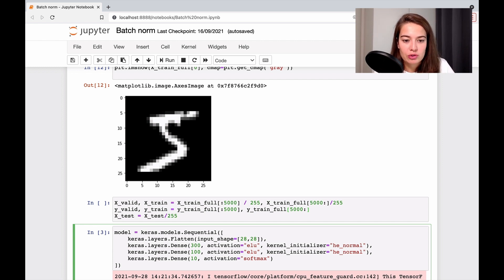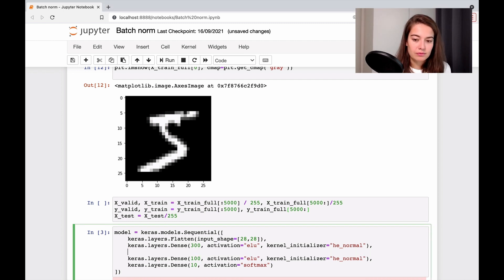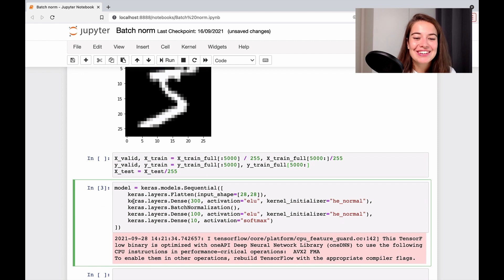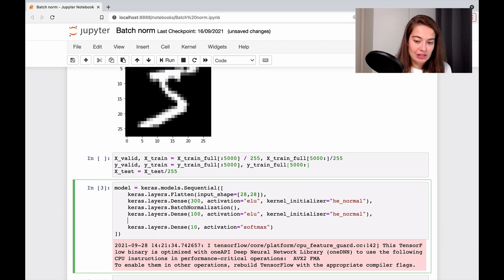How can I add batch normalization to this? Well, it's very simple. Basically, all you have to do is add this. It's a layer from Keras. It's called batch normalization. And you can do Keras.layers batch normalization. And then you have to put it after your layers, after your hidden layers.